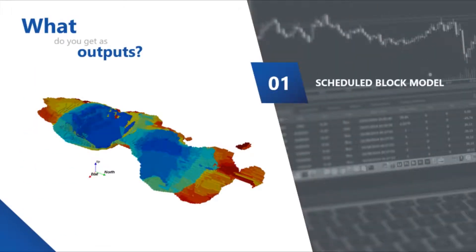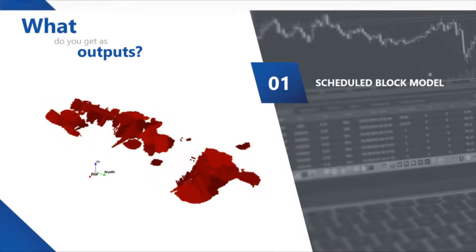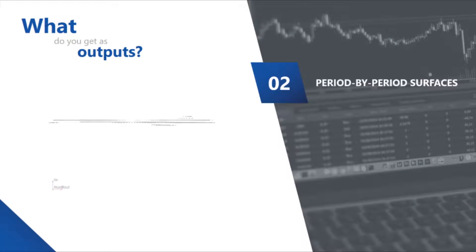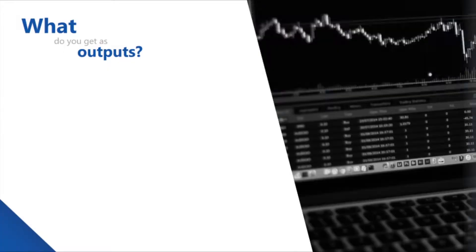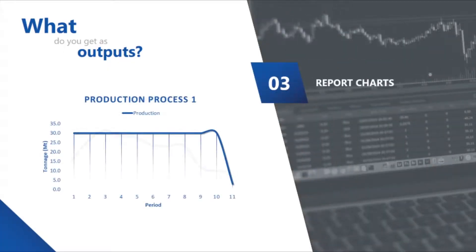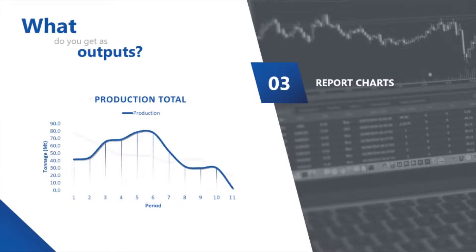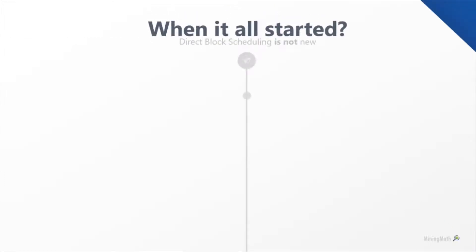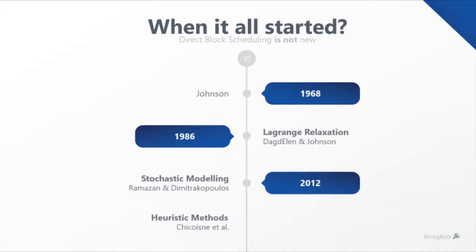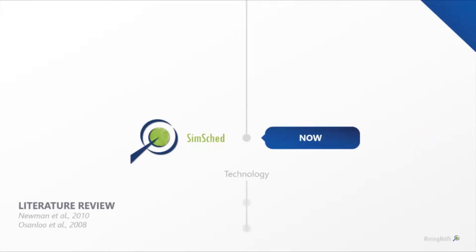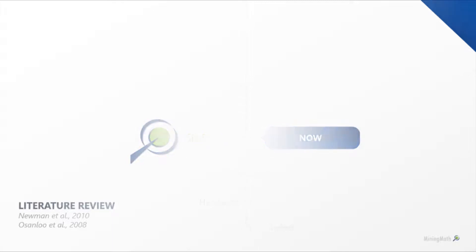The colors represent the periods of the extraction sequence, and it is not a spotted mathematical solution. It generates surfaces that represent the end of each extraction period, which can be imported into another tool for designing. Charts and reports are automatically exported to Excel. Direct block scheduling has been extensively studied by the Academy since 1968, when Johnson first published an algorithm that could optimize the mine schedule straight from the block model. In 2015, SimSched DBS Beta was released to the market as the first commercial tool to implement such technology.